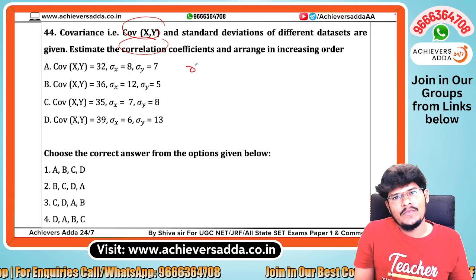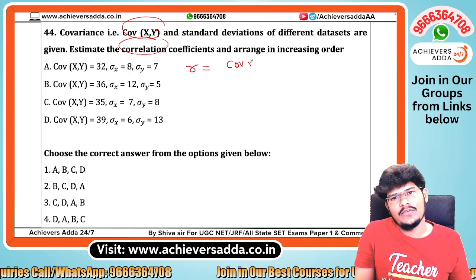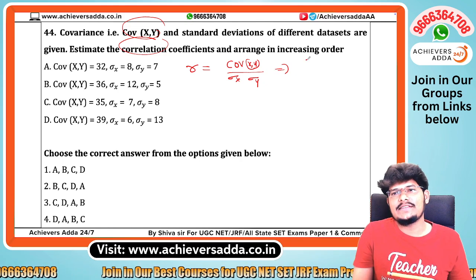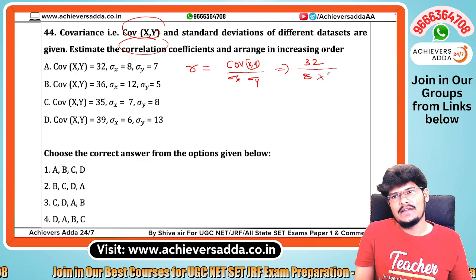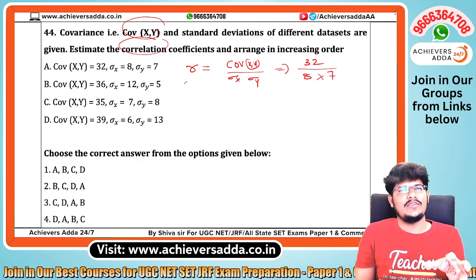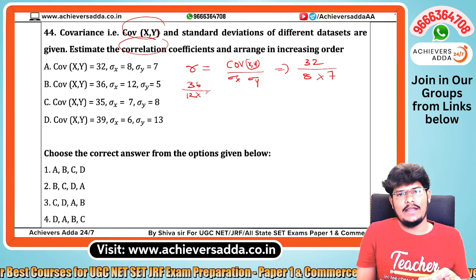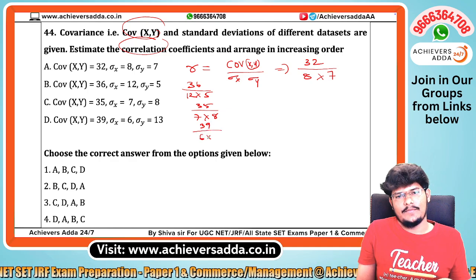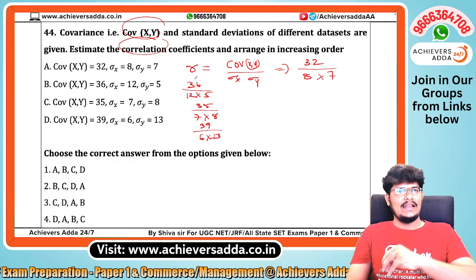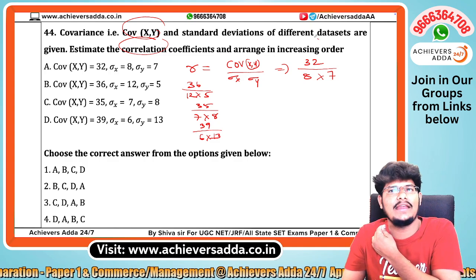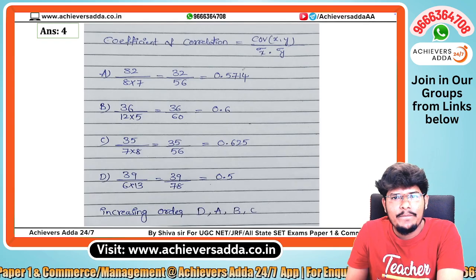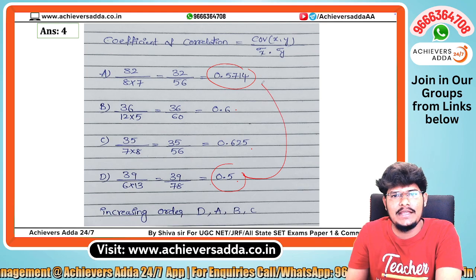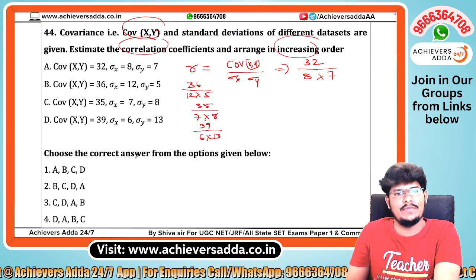We need to identify the correlation. The formula is: correlation = covariance(x, y) divided by standard deviation x into standard deviation y. So: covariance is 32, standard deviation x is 8, standard deviation y is 7. Similarly, 36 divided by 12 into 5; 35 divided by 7 into 8; and 39 divided by 6 into 13. In increasing order the values are 0.57, 60%, 62.5%, and 70% — giving the answer D, A, B, C.